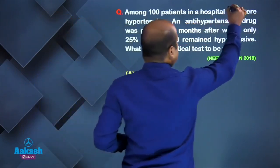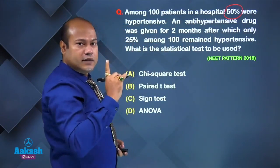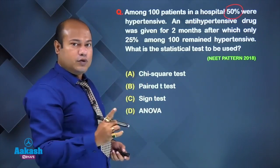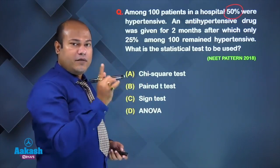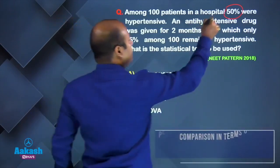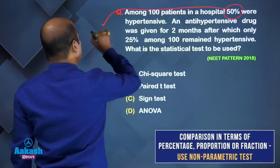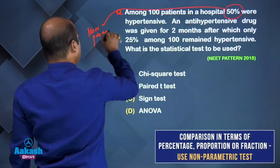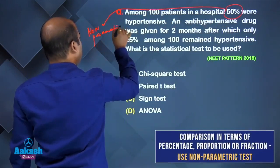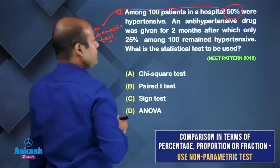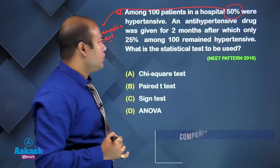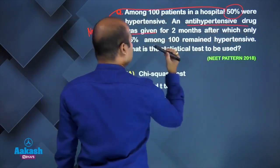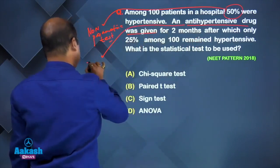Among 100 patients in a hospital — note the word percentage. Whenever you are talking about percentage, that is comparison in terms of percentage, fraction, or proportion. In that case you use a non-parametric test. An anti-hypertensive drug was again given, so this will be an example of intervention.